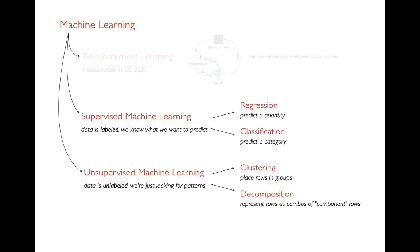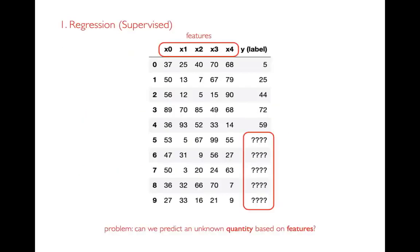In unsupervised learning, we might try to cluster our data — placing rows into different groups — or we might try to decompose our rows. We might notice that rows each have five numbers in them, but every row is like a combination of two component rows. So there's some simplicity in there even though there might be a lot of columns in our data.